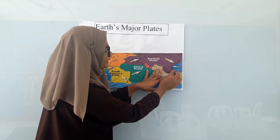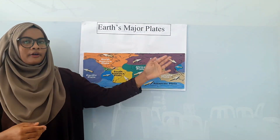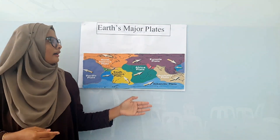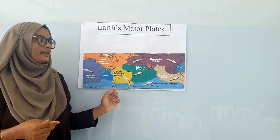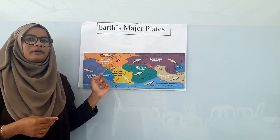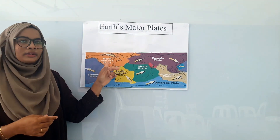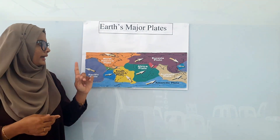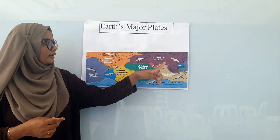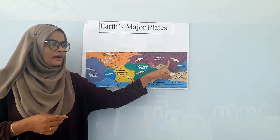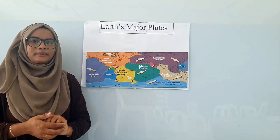Now the puzzle is ready. You can see the map of the Earth and all the seven major plates: Pacific Plate, North America Plate, South America Plate, Africa Plate, Eurasia Plate, Australia Plate, and Antarctic Plate.